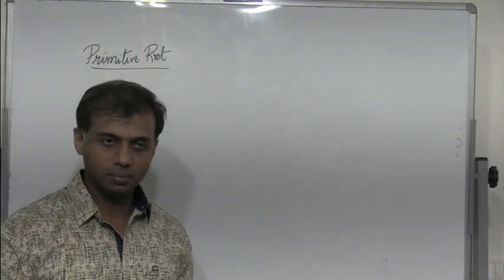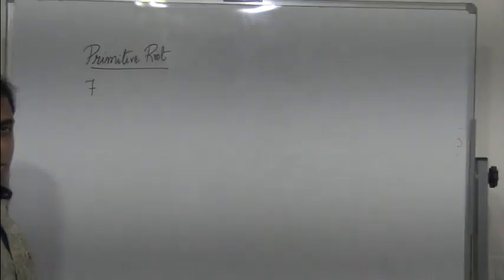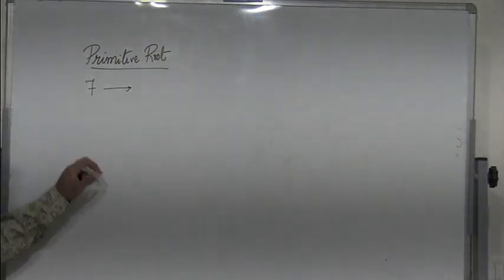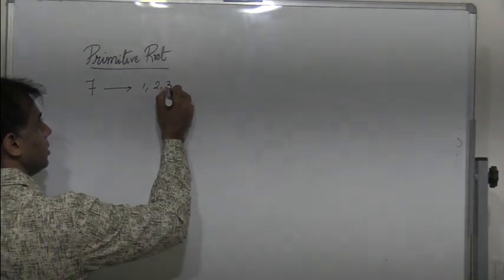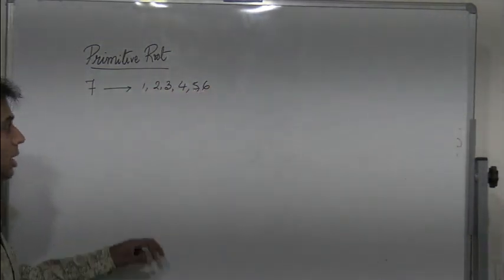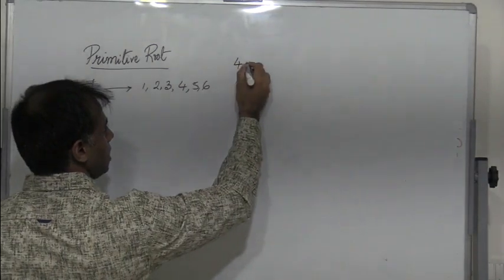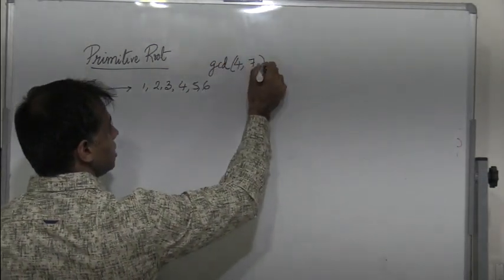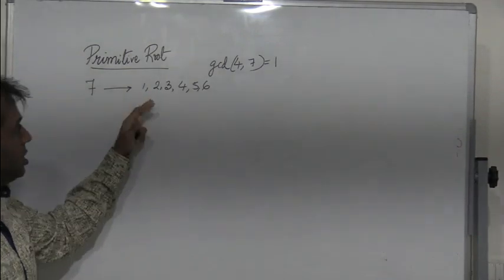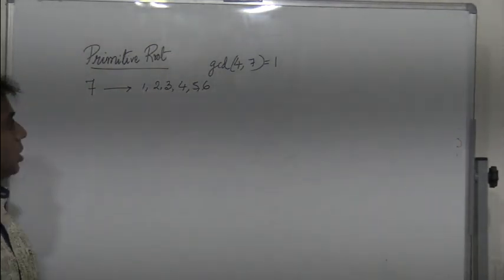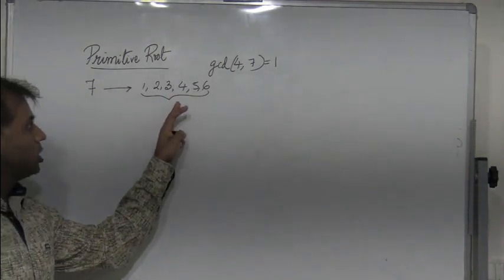How do we calculate the primitive root of a given number? Consider the number 7, which happens to be a prime number. First we find the numbers which are relatively prime to 7. Since 7 is a prime number, all numbers less than 7 are relatively prime to 7. By relatively prime, we mean the GCD of a given number with 7 is 1. So we need to find, among these numbers which are relatively prime to 7, which is the primitive root of 7.